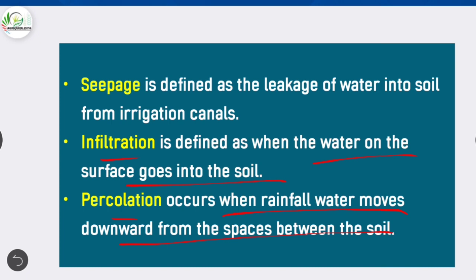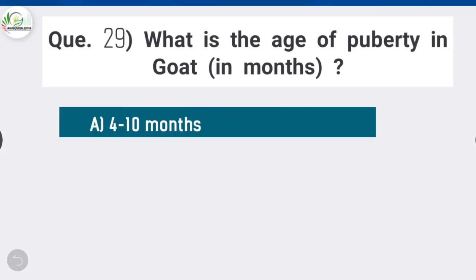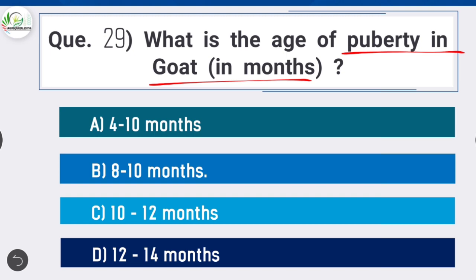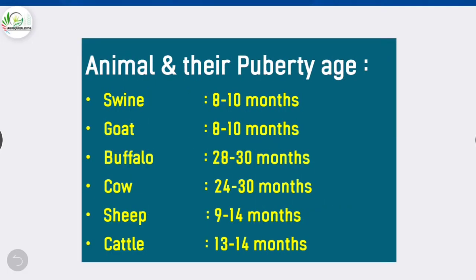Question 29: What is the age of puberty in goat in months? Option B is correct: 8 to 10 months. Here is a list of puberty ages: swine — 8 to 10 months; goat — 8 to 10 months; buffalo — 28 to 30 months; cow — 24 to 30 months; sheep — 9 to 14 months; cattle — 13 to 14 months.